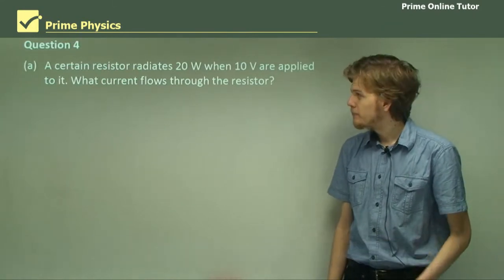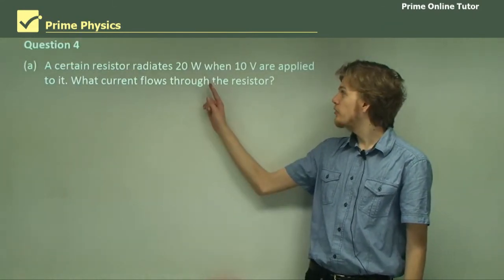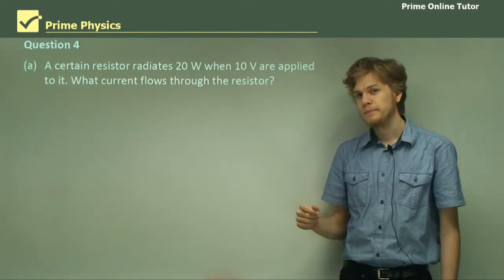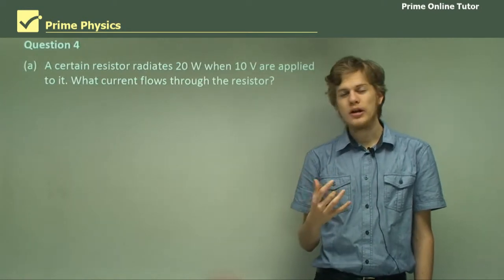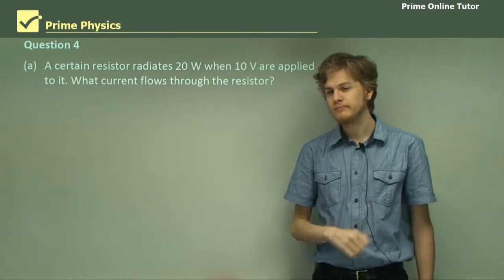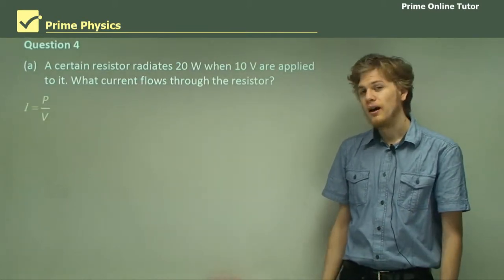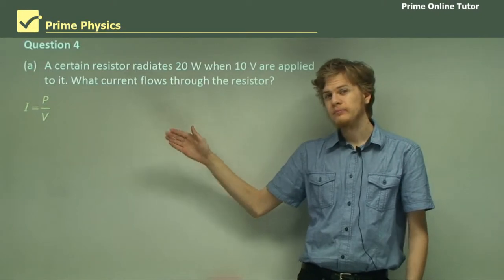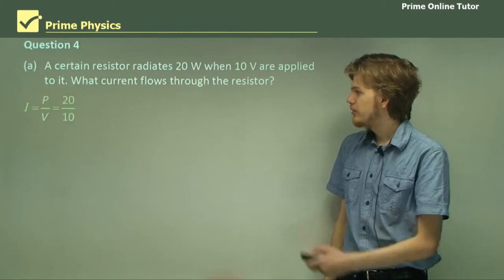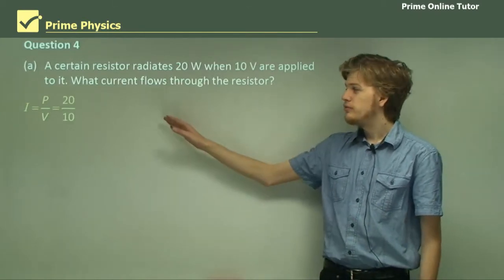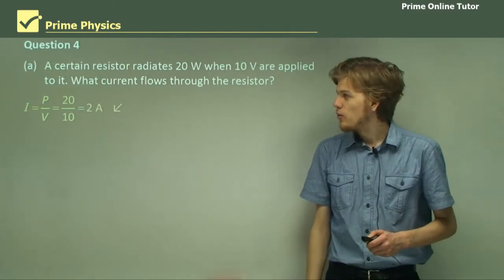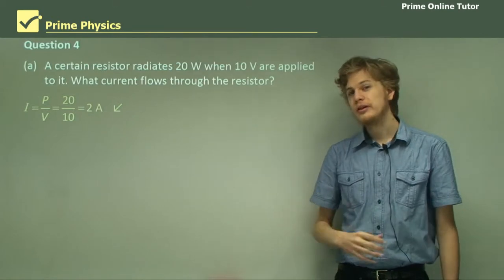Question 4. A certain resistor radiates 20 watts when 10 volts are applied to it. What current flows through the resistor? So in this case, we need to use one of our equations for power, but rearrange it so that current is the subject of the equation. I equals P over V is a rearrangement of P equals VI. So we have 20 over 10, which turns into 2 amps. Remember that 1 watt per 1 volt equals 1 amp.